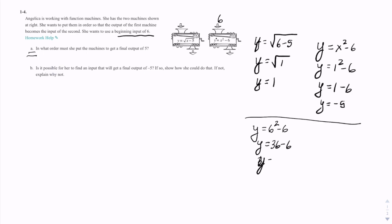Now the 30 comes out here, and we're going to feed that into this machine. 30 as input, which is the x. So we get y equals the square root of 30 minus 5.